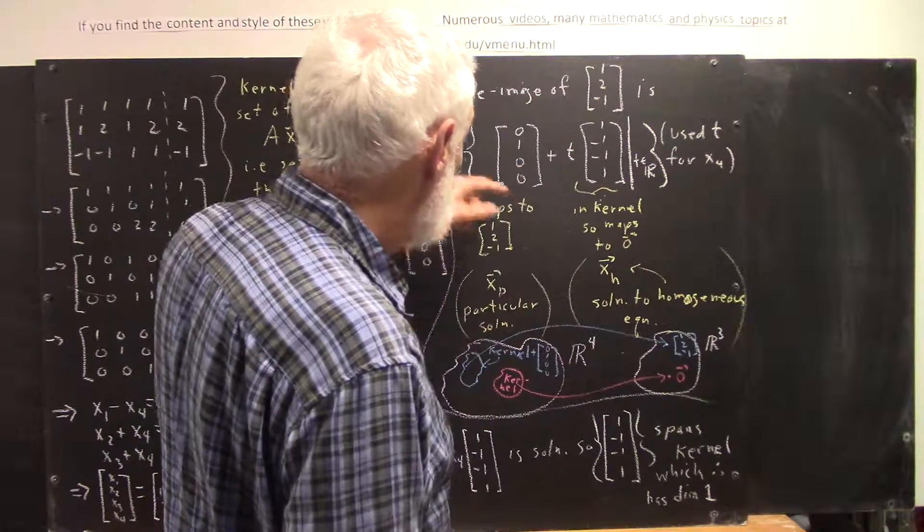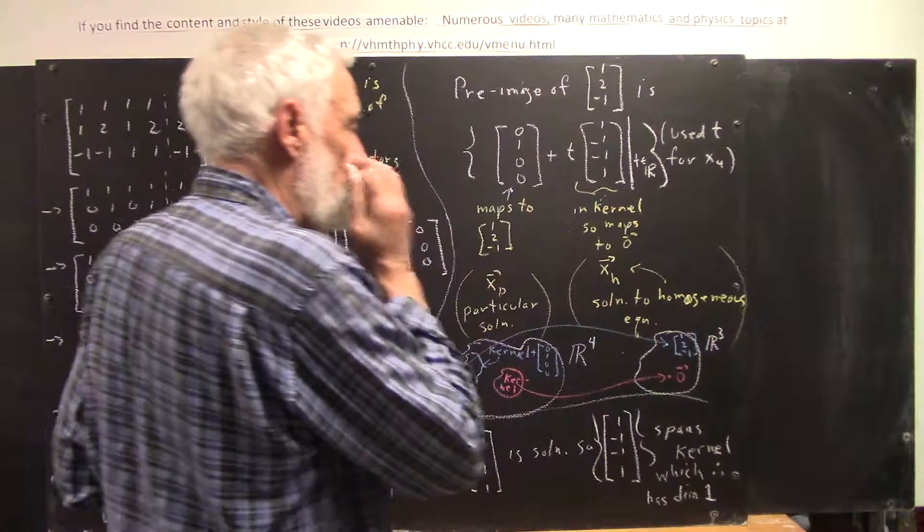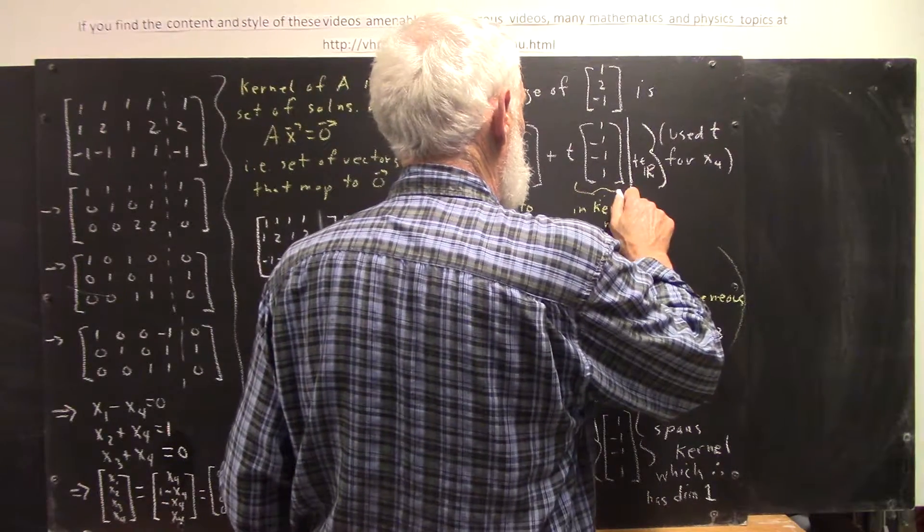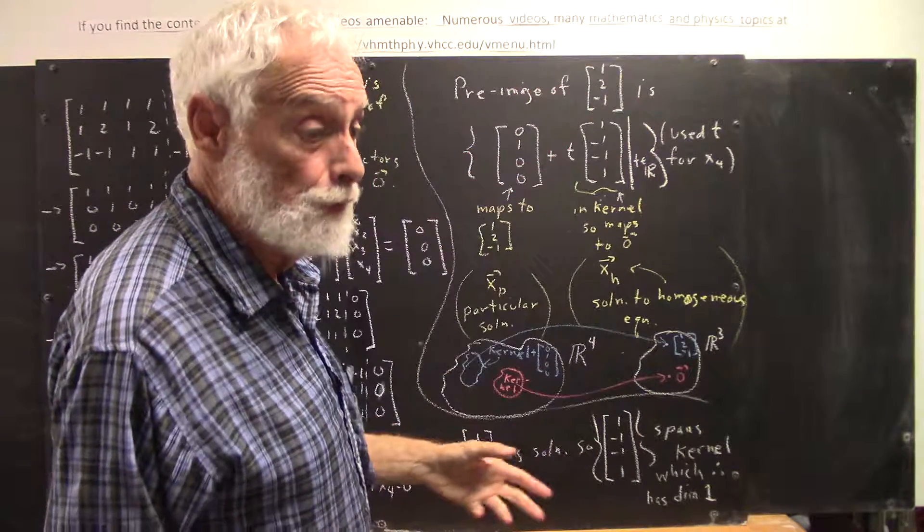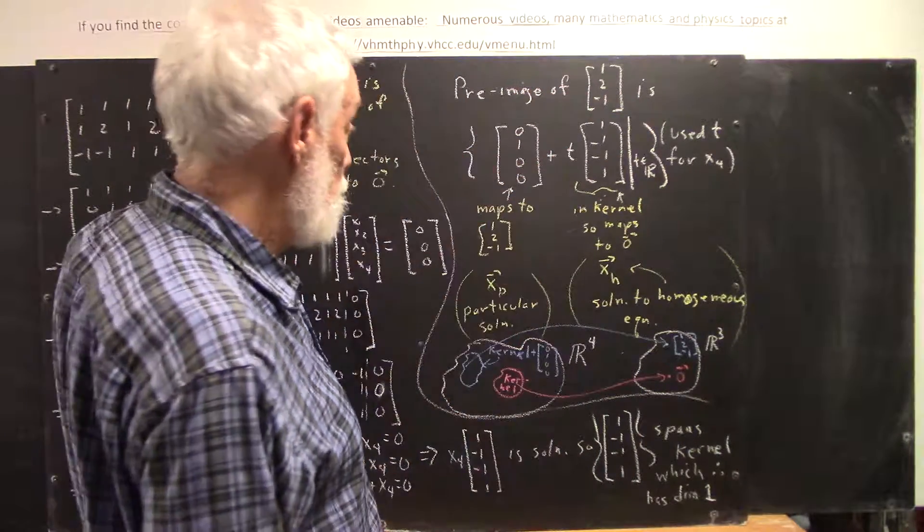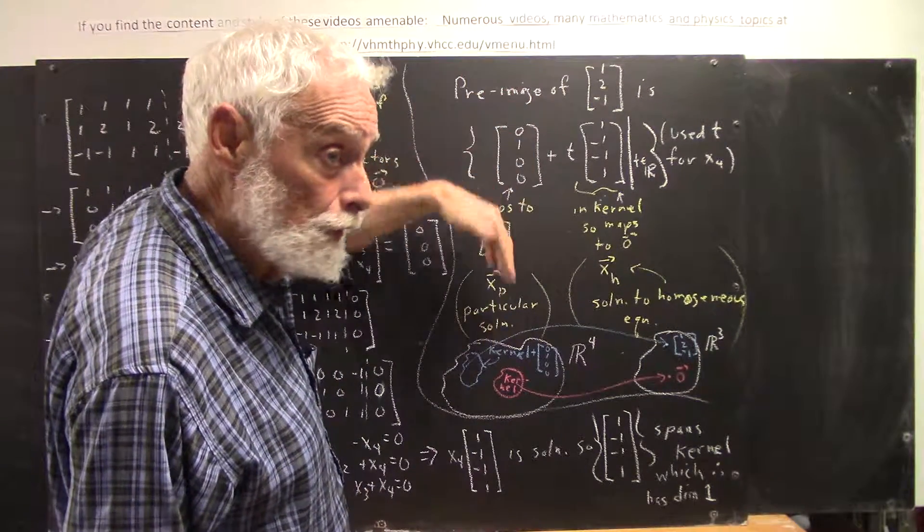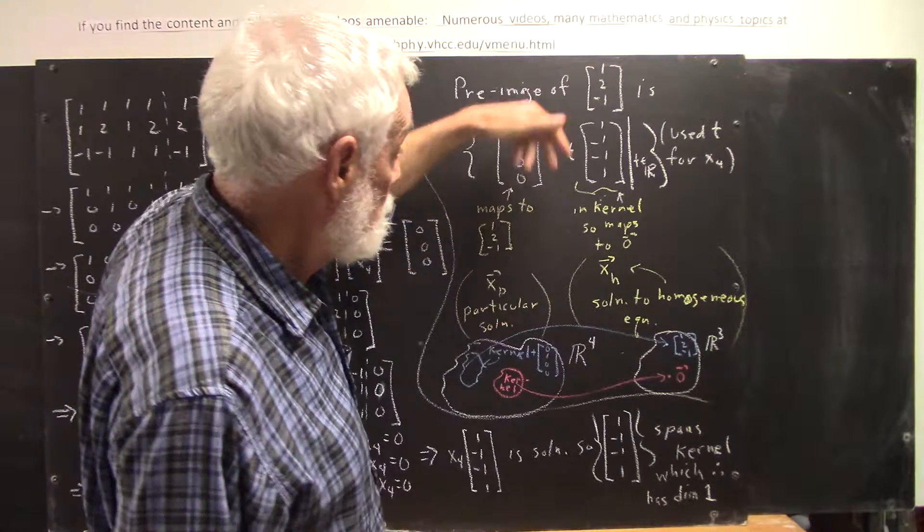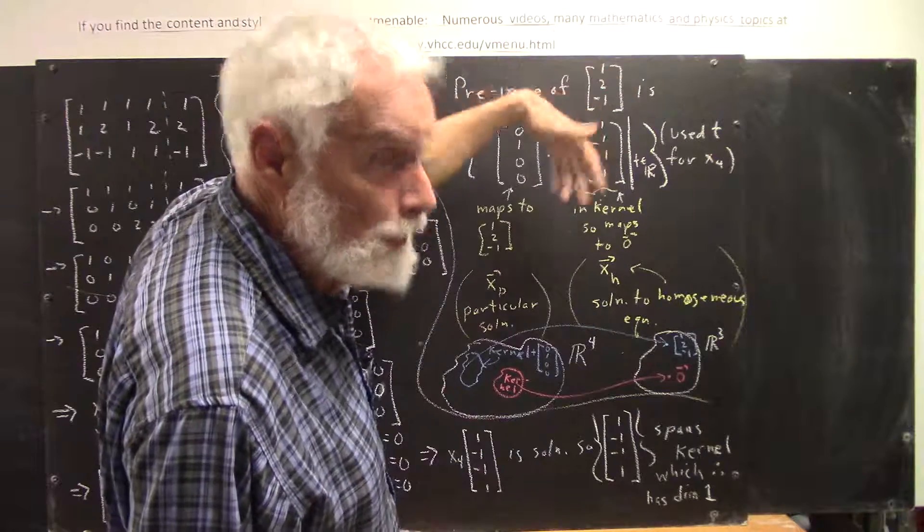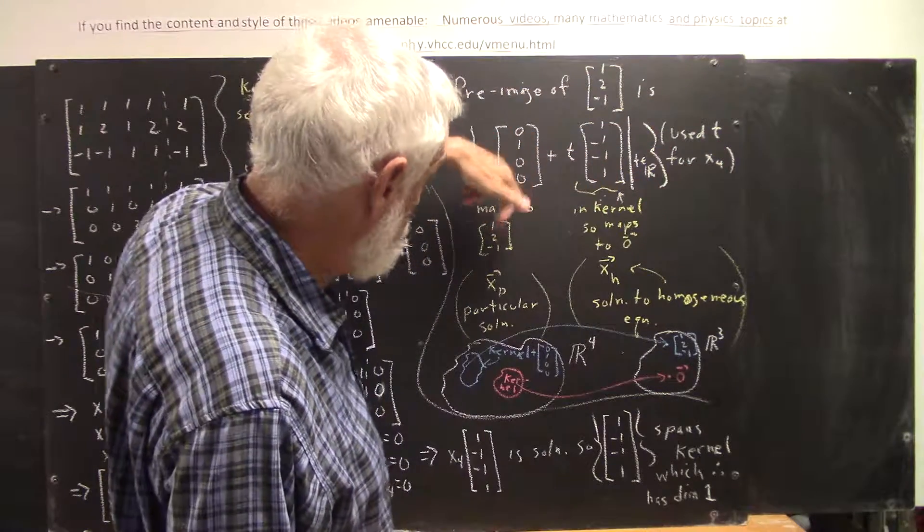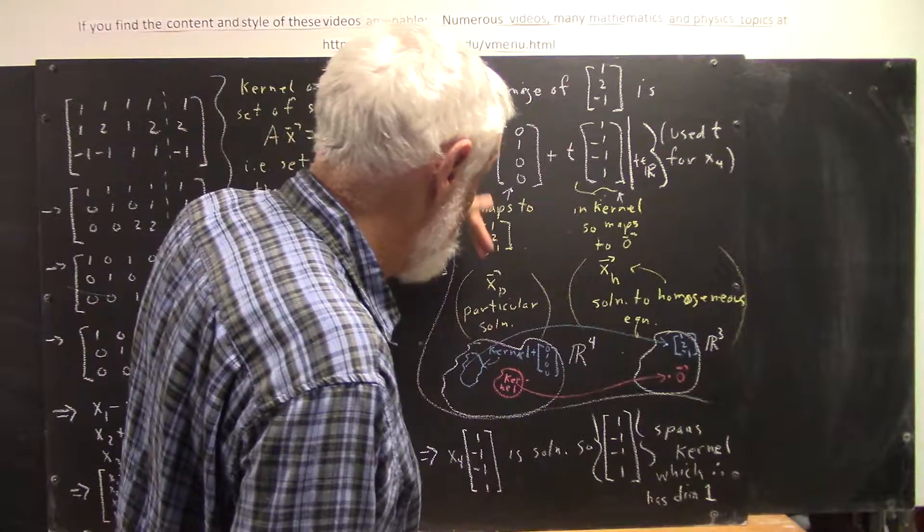This vector maps to 1, 2, negative 1. This vector is in the kernel so it maps to 0. So that if you map this plus this, transformation is linear, you get whatever the transformation does to this, which is the vector 1, 2, negative 1, plus whatever the transformation does to this, but since this is in the kernel it maps to 0, so you get 1, 2, negative 1 plus 0 vector, which is just 1, 2, negative 1.